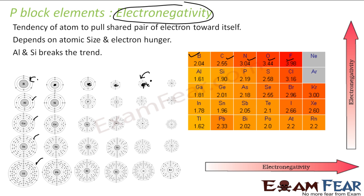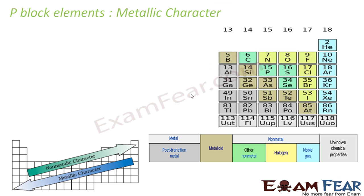There are some anomalies where aluminum and silicon break the general trend. Going down a group, electronegativity generally decreases, but there are increases at certain points, such as with aluminum and silicon.